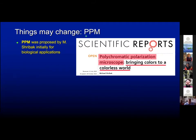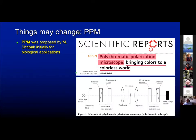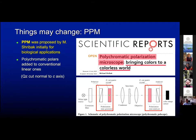However, things may change, because there is a new technique — polychromatic polarization microscopy, I will refer to it as PPM — that was proposed a few years ago by Michael Schreibach for biological applications. With PPM, the microscope is more or less the same as our polarizing microscope, but there are two polarization state generators added to the polarizer and to the analyzer, which can be quartz crystals cut normal to the c-axis, and which induce this polychromatic polarization.